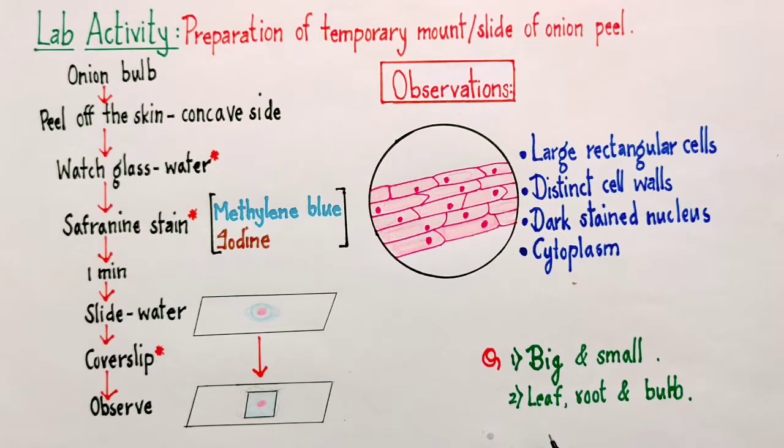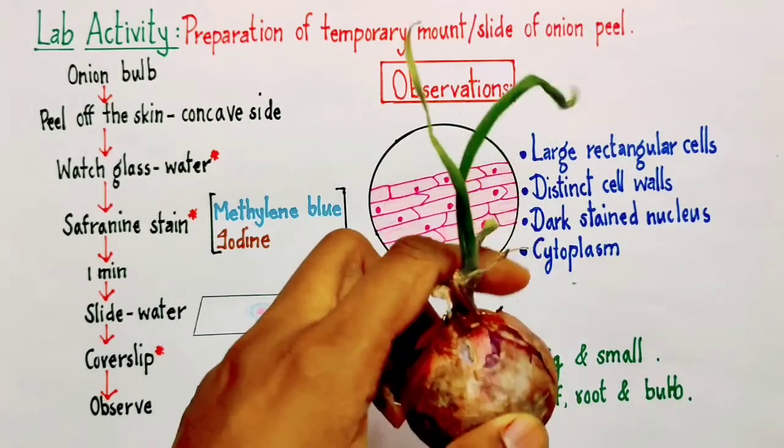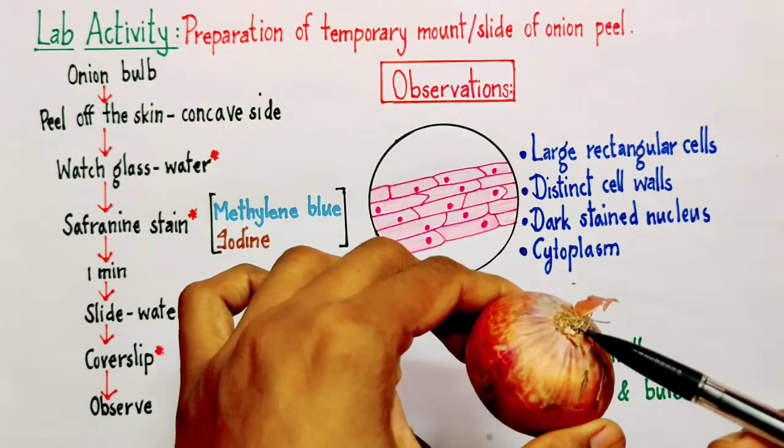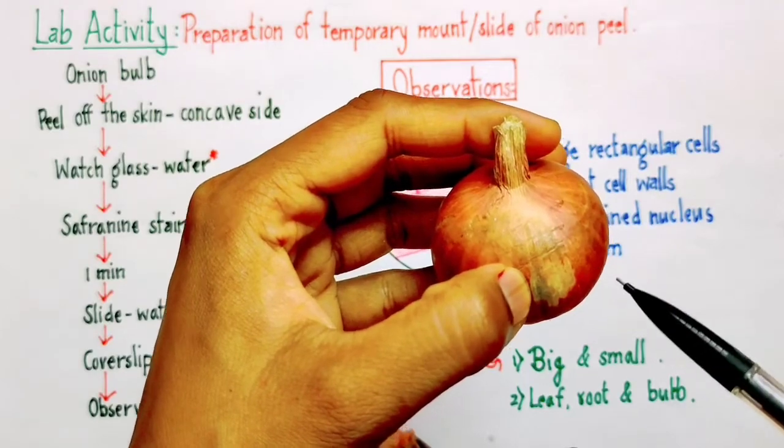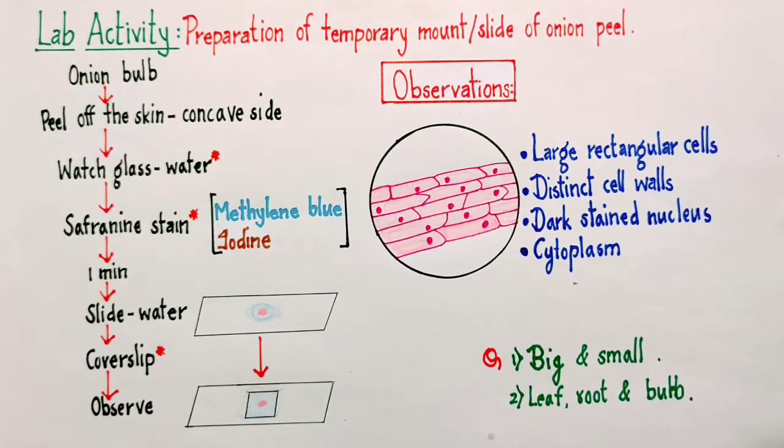I have one more question to you. Suppose there are three students. One of them prepares a slide of onion leaves, another one prepares the slide using the onion root, and there is third student who is going to prepare a slide using the bulb portion. Now again my question remains the same: whether there will be difference in the cells what they are going to observe? The answer is yes.